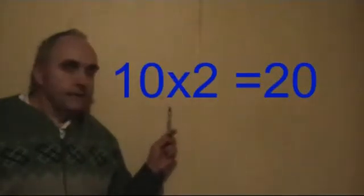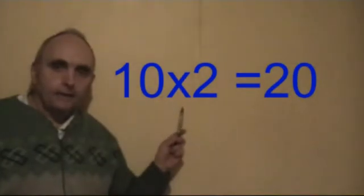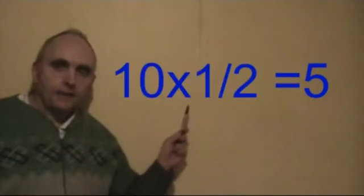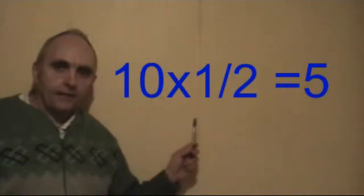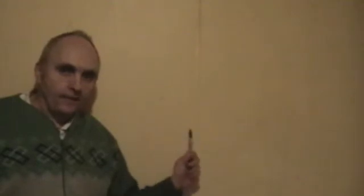10 times 2 is 20, and 10 times 0.5 is 5. And you add that 5 to the 20, which makes 25.